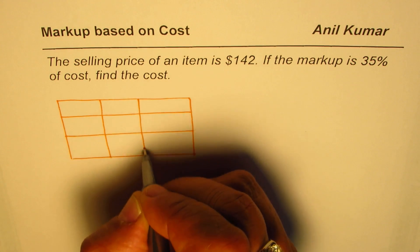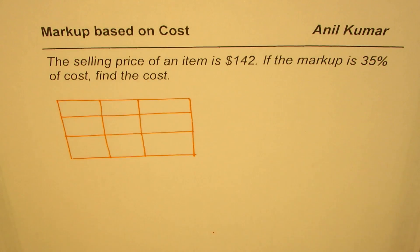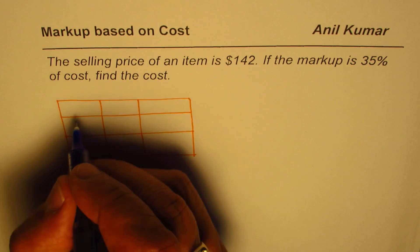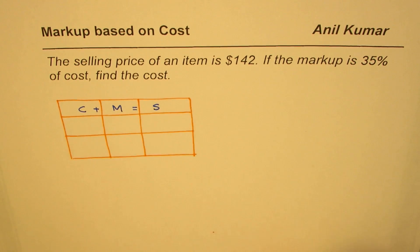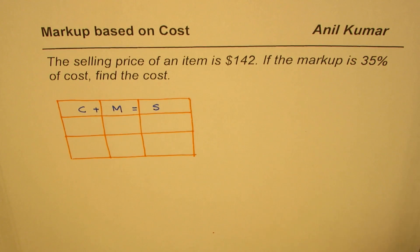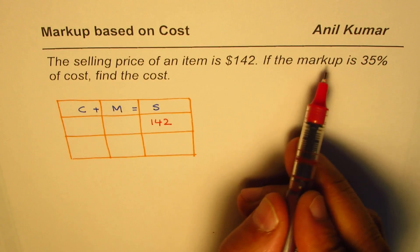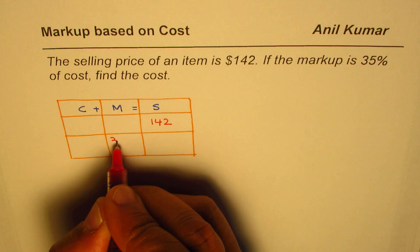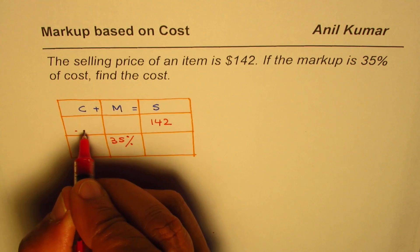What we know here is that cost plus markup is selling price. We are given that the selling price of the item is $142. If the markup is 35% of the cost, find the cost. We need to find the cost.